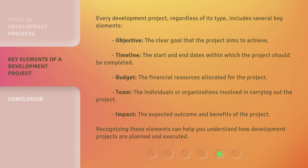Every development project, regardless of its type, includes several key elements. Objective: the clear goal that the project aims to achieve. Timeline: the start and end dates within which the project should be completed. Budget: the financial resources allocated for the project. Team: the individuals or organizations involved in carrying out the project. Impact: the expected outcome and benefits of the project. Recognizing these elements can help you understand how development projects are planned and executed.